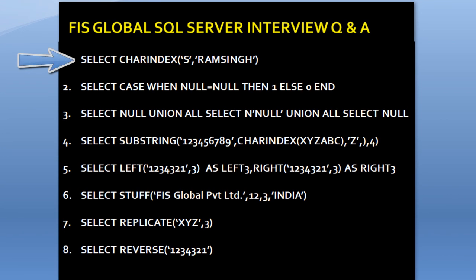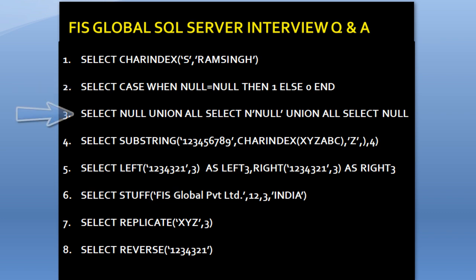The first question is: SELECT CHARINDEX('s', 'Ram Singh'). What would be the value for this? The second question is: SELECT CASE WHEN NULL = NULL THEN 1 ELSE 0 END. What would be the output for this query? Next is: SELECT NULL UNION ALL SELECT NULL (as a string) UNION ALL SELECT NULL. What would be the output for this query?